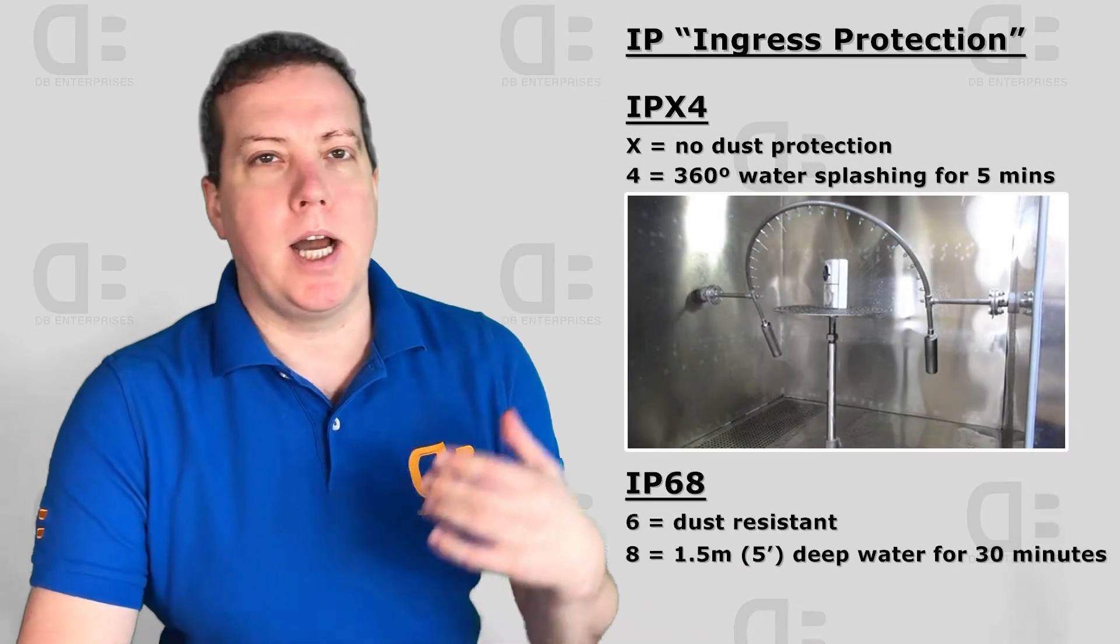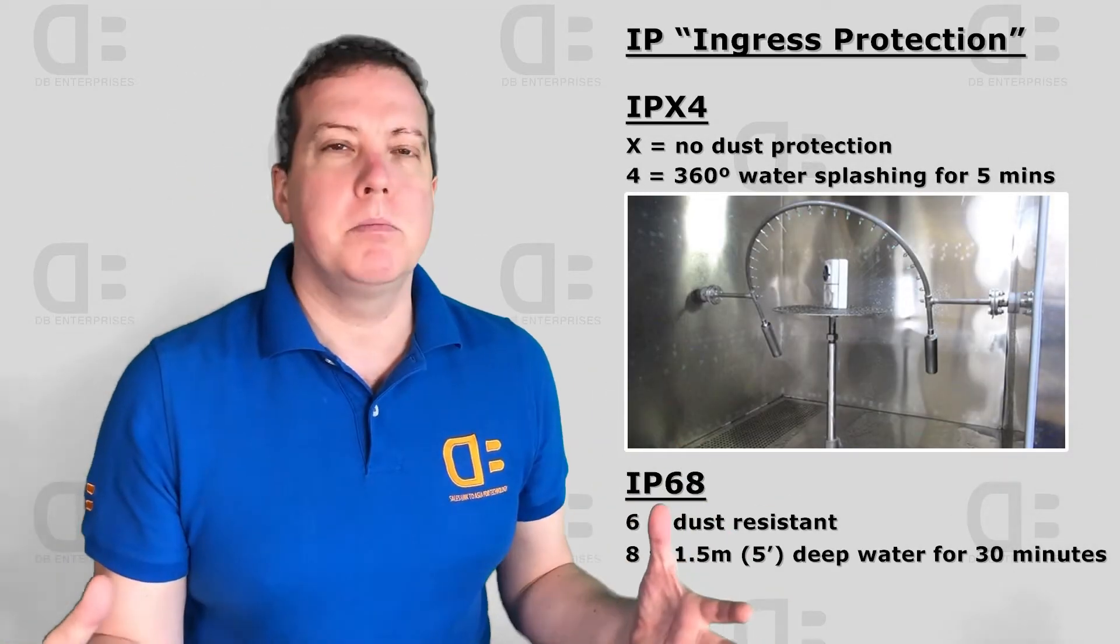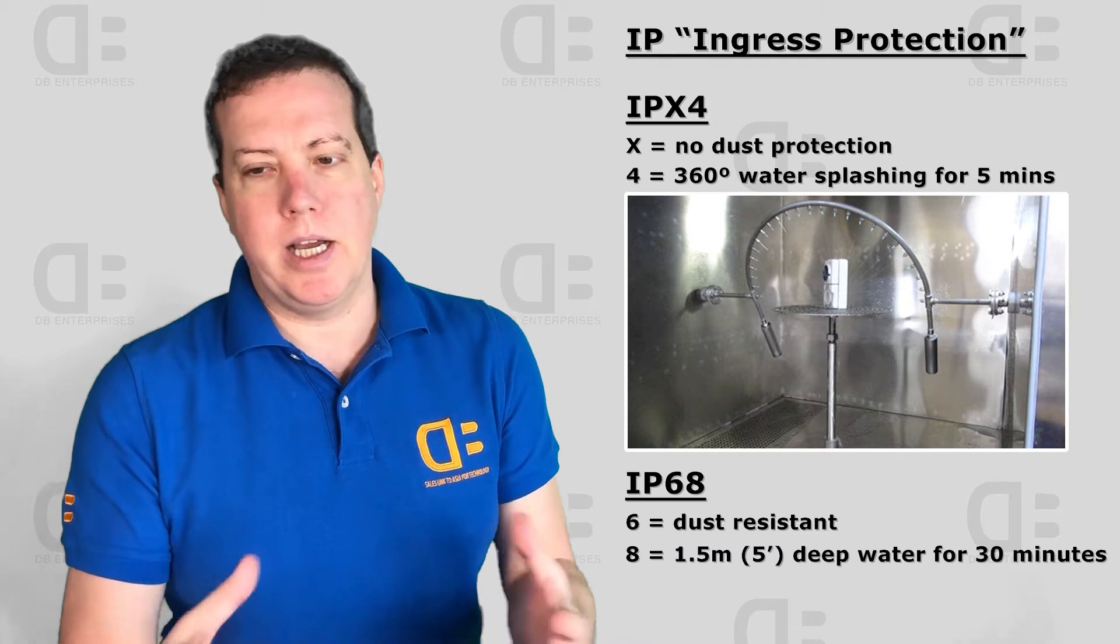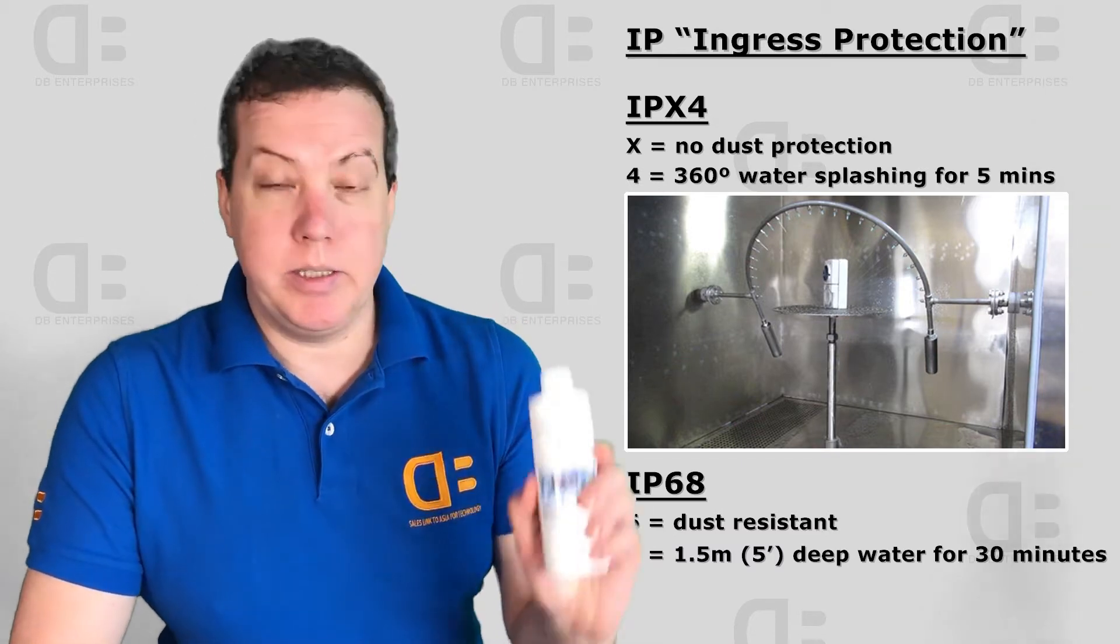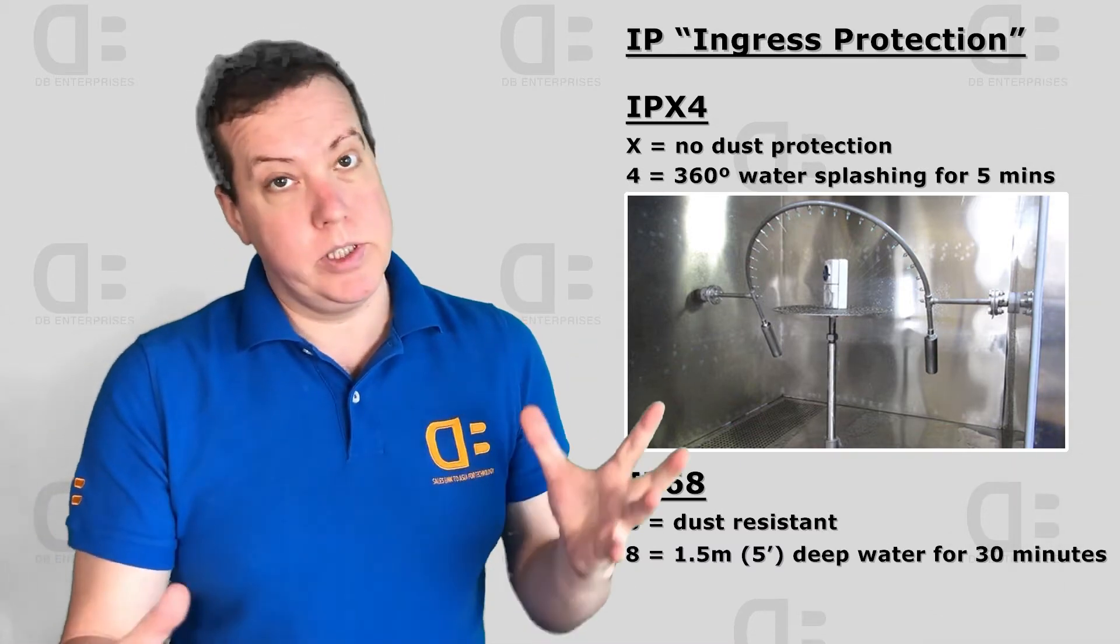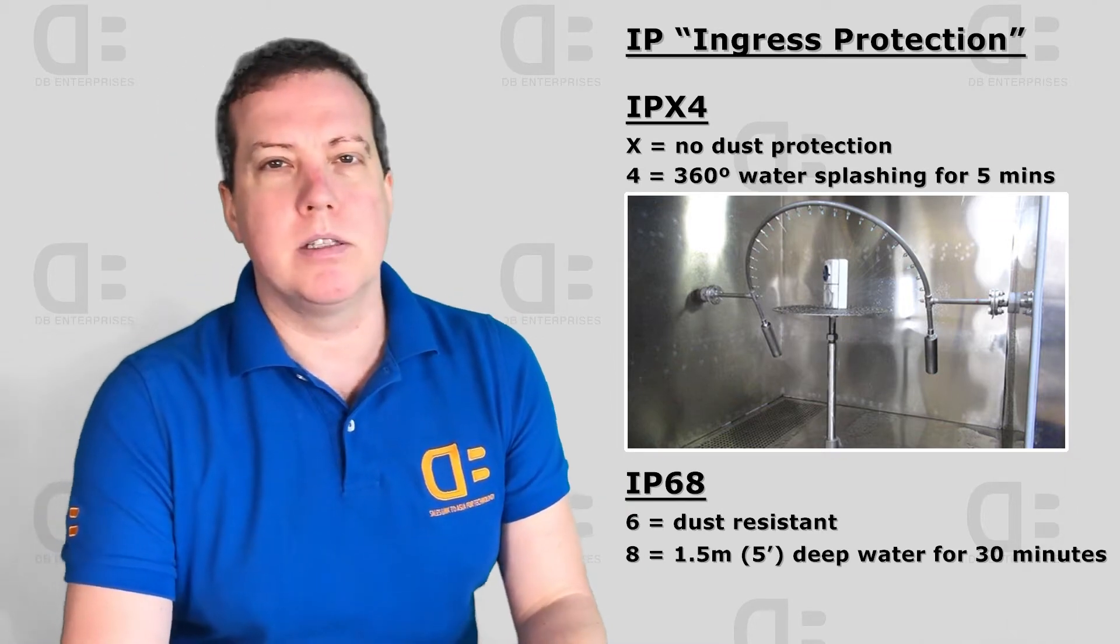A lot of people see IPX4, IP68, sweat proof on the box. So what does that mean and how do you achieve it and why does DB choose to promote NanoFlowX over these other solutions? Let's weigh in on the subject.